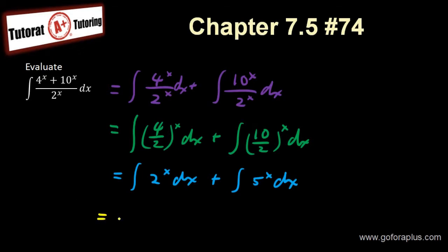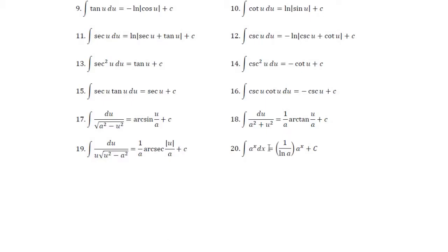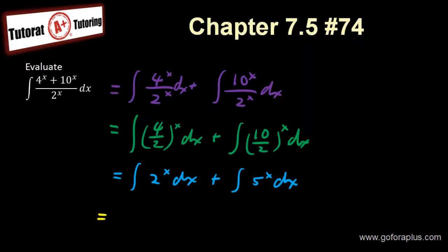The answer is going to be ln, oh sorry, this should be 1 over ln, right? So if you look at the formula, it's 1 over. So I have 1 over ln of 2 times 2 to the x plus 1 over ln of 5 times 5 to the power of x plus c.